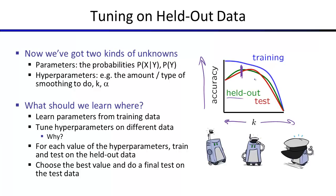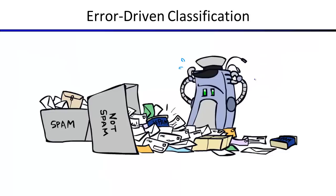To summarize: you learn parameters from training data, tune hyperparameters like the smoothing amount k on held-out data, and once you've picked k, your classifier is complete and you evaluate on the test set.